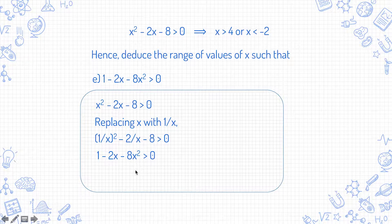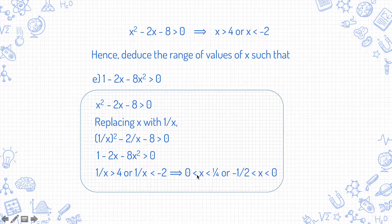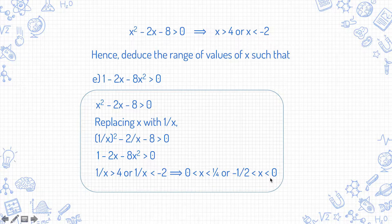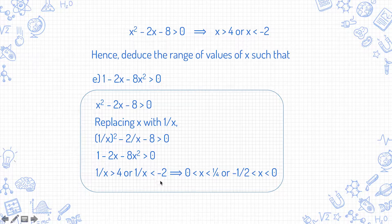So you're replacing x with 1/x in the solution. 1/x > 4 gives 0 < x < 1/4, and 1/x < -2 gives -1/2 < x < 0. Take note of the 0 here — if 1/x > 4, it means 1/x is positive, so x has to be positive. And over here as well: if 1/x < -2, it means 1/x is negative, and therefore x has to be negative.